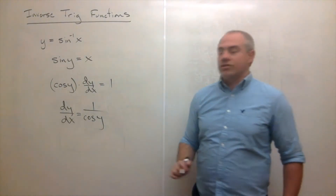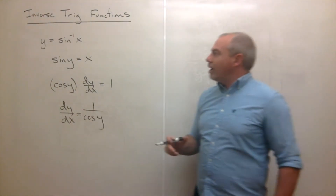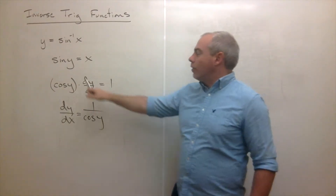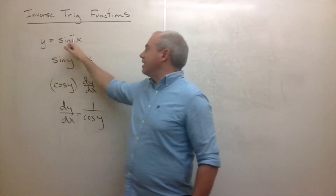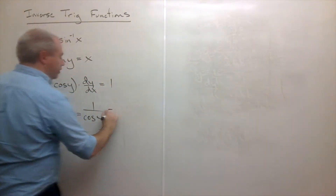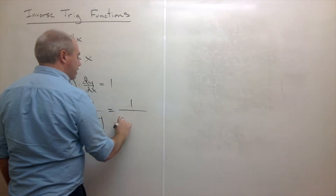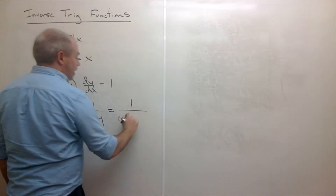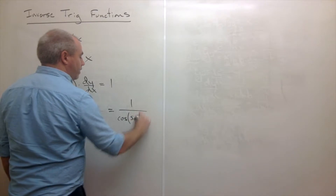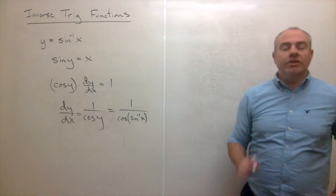So dy/dx equals 1 over cosine of y. Well, what is y? Going back to the beginning, y is sine inverse of x, so I could write that the derivative is 1 over cosine of sine inverse of x. That's pretty good, but I can do a little bit better.